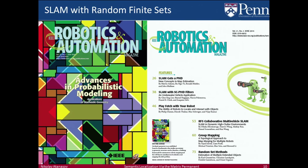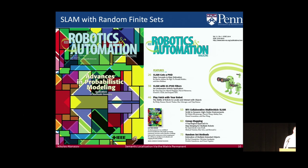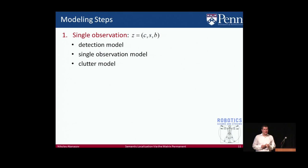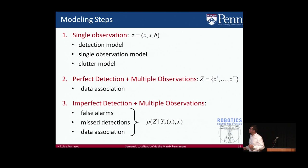Bringing random finite sets into SLAM is becoming a hot topic. The latest issue of Robotics and Automation magazine is devoted to random finite sets in connection with Robotics and SLAM. We're going to build a model for the likelihood in steps of increasing complexity: first a model for a single detection, then combining it into a model for multiple detections assuming perfect detection, and finally the complete model capturing false alarms, misdetections, and data association.